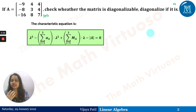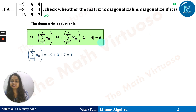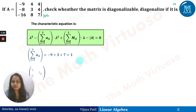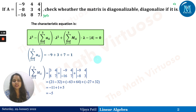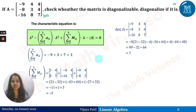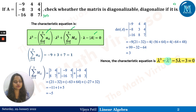The sum of diagonal elements Σaᵢᵢ comes out to be 1. The sum of minors of diagonal elements Σmᵢᵢᵢ comes out to be −5. The determinant of matrix A is 3. Putting all these values into the characteristic equation, we get: λ³ − λ² − 5λ − 3 = 0.